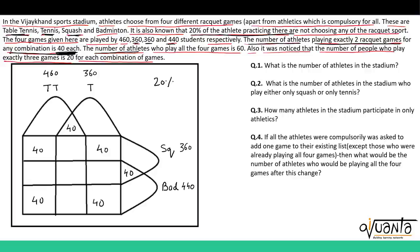The number of athletes who play all 4 games is 60, so which area represents all 4? It is over here, so this will be 60. Now, the number of people who play exactly 3 games is 20 for each combination. The areas that represent exactly 3 are: one area here, here, here and this one. So let us write 20 in each area: 20, 20, 20 and 20.